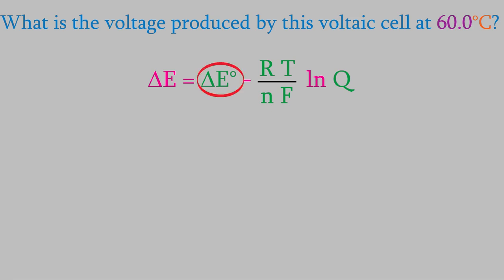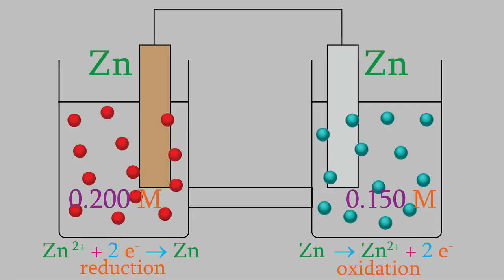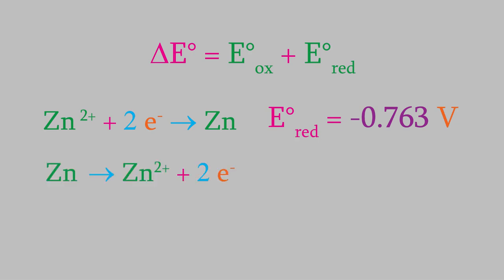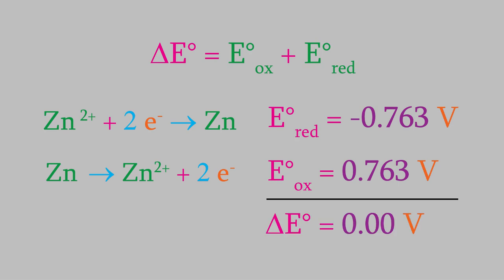To start, let's calculate delta E zero. You might remember that we get this by adding the standard reduction potentials of the anode and the cathode. The zinc electrode on the right side is losing electrons, so that's the anode. And the zinc ions on the left side are gaining the electrons and becoming neutral atoms. If we look in appendix E, we find out that the reduction potential of this reaction is negative 0.763 volts. But the other reaction is just the reverse of the second one, so it has a potential of positive 0.763 volts. When we add the reactions together, we find out that the standard reduction potential is 0 volts. So that's what we plug into the Nernst equation.